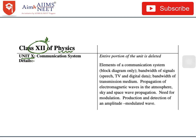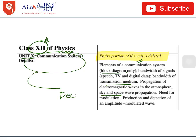Unit 10 — Communication Systems — the entire portion has been deleted from the syllabus. That includes elements of communication system, bandwidth of signals, bandwidth of transmission medium, propagation of electromagnetic waves in the atmosphere, sky and space wave propagation, need for modulation, production and detection of an amplitude modulated wave — everything. The whole chapter is deleted from the NEET 2019 syllabus.